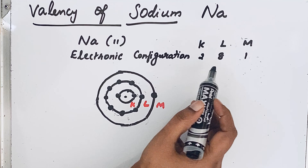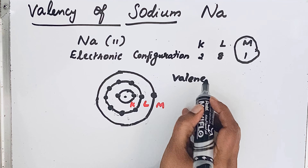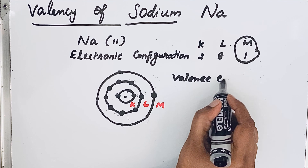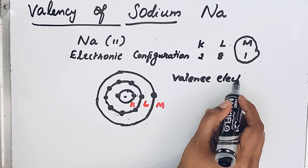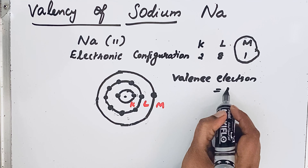The electrons which are in the outer shell are called valence electrons. For sodium, M is the outer shell. So the number of valence electrons in sodium is only 1.